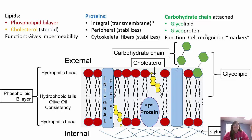The carbohydrate chains are in green. They can either be glycolipids or glycoproteins. 'Glyco' is the carbohydrate part, lipid is a lipid, protein is a protein. So if the carbohydrate chain is attached to a lipid, it's a glycolipid; if it's attached to a protein, it's a glycoprotein. These function very importantly in cell recognition - they act as markers so our immune system can identify cells as self-cells, so we can recognize foreign versus self.